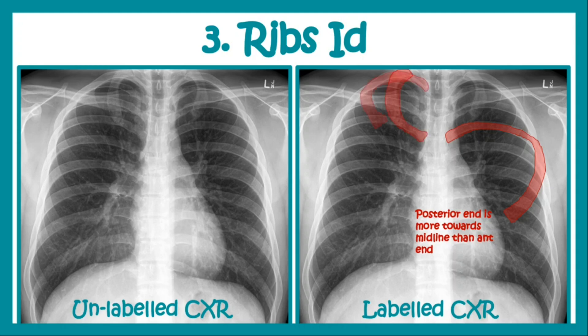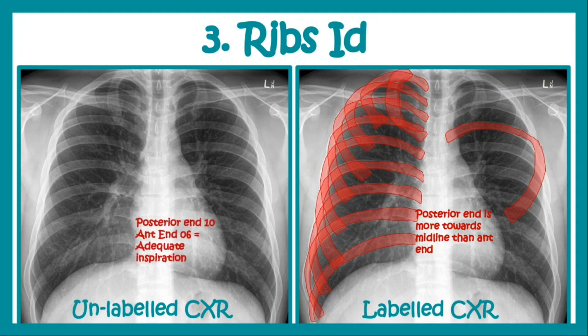By this fashion we can identify all the ribs one by one: first, second, third, fourth, fifth, sixth, seventh, eighth, ninth, and tenth rib. In a proper end-inspiration chest x-ray you will see 10 posterior ends and 6 anterior ends. If there are 10 posterior ends and 6 anterior ends, that indicates adequate inspiration. It is your job to identify the ribs on the left hand diagram — both the anterior end and the posterior end.